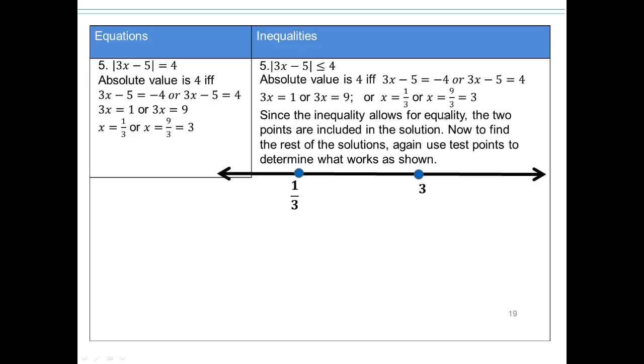So, we are going to set it equal to, solve, you get those two points. Should we include them or not? They are included because you have less than or equal to 4. We need test points below 1 third, between 1 third and 3, and beyond 3.